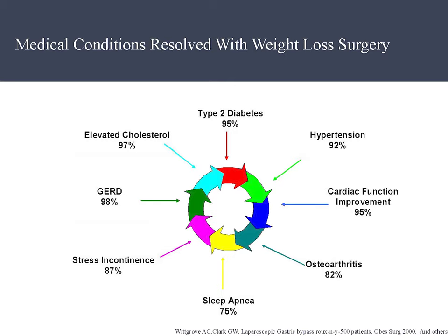What happens after weight loss surgery? The diseases we reviewed show dramatic improvements: type 2 diabetes decreases by 95%, hypertension 92%, cardiac function improvement 95%, osteoarthritis symptoms 82%, sleep apnea 75%, stress incontinence 87%, GERD which is heartburn 98%, and elevated cholesterol 97%.